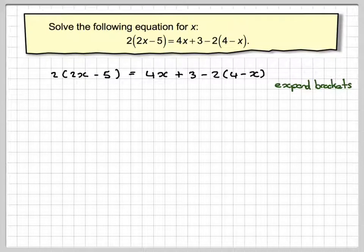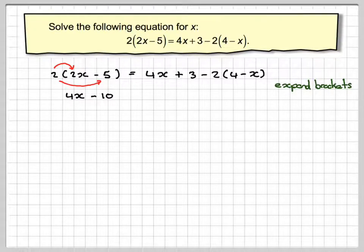So expanding this bracket, we're going to have 2 times 2x which gives me 4x. 2 times minus 5 which gives me minus 10. We've got to put in the equal sign and we've got 4x, there's no bracket there, plus 3. So these have no effect on this bracket.